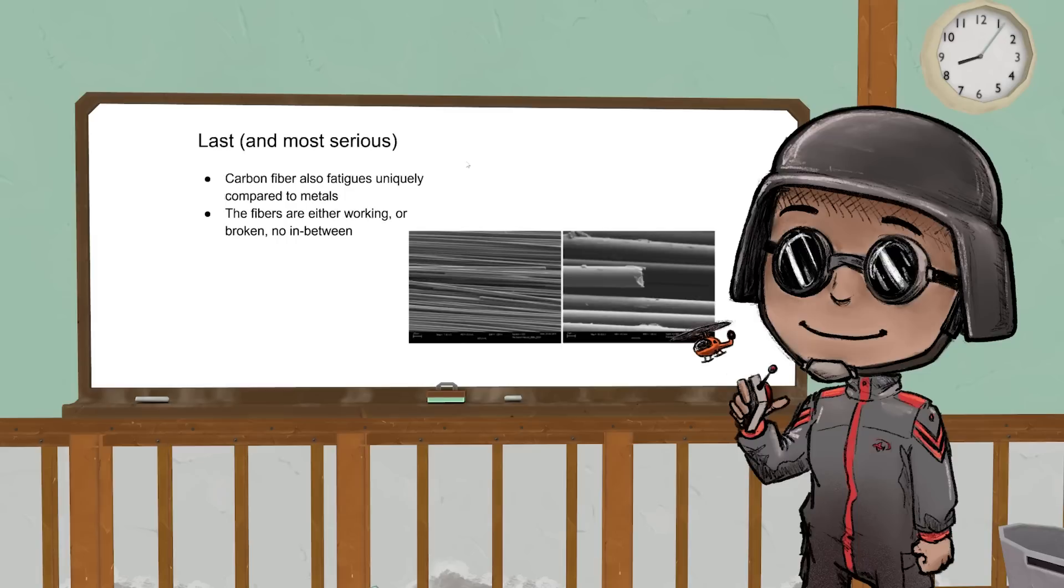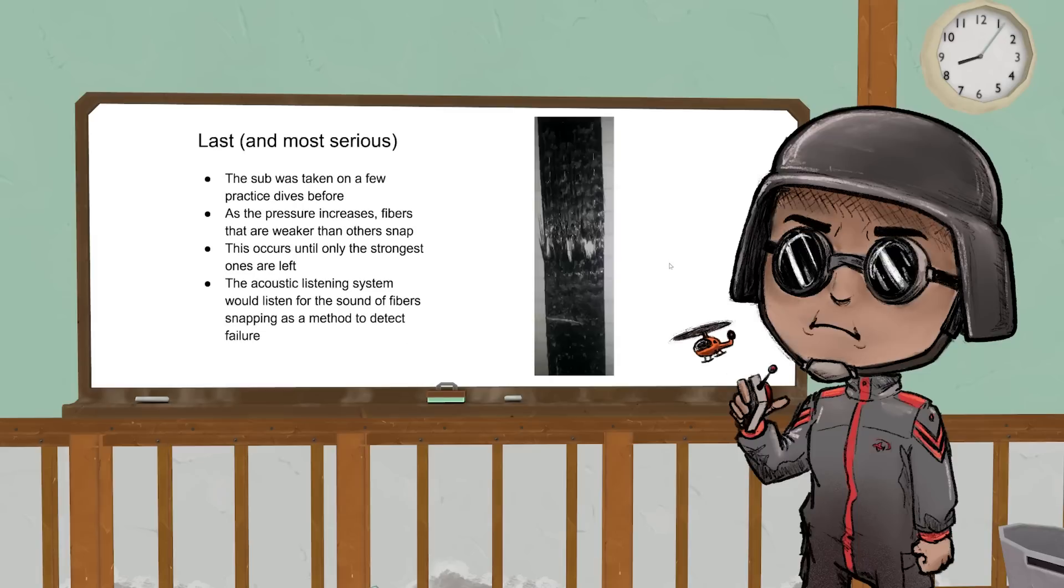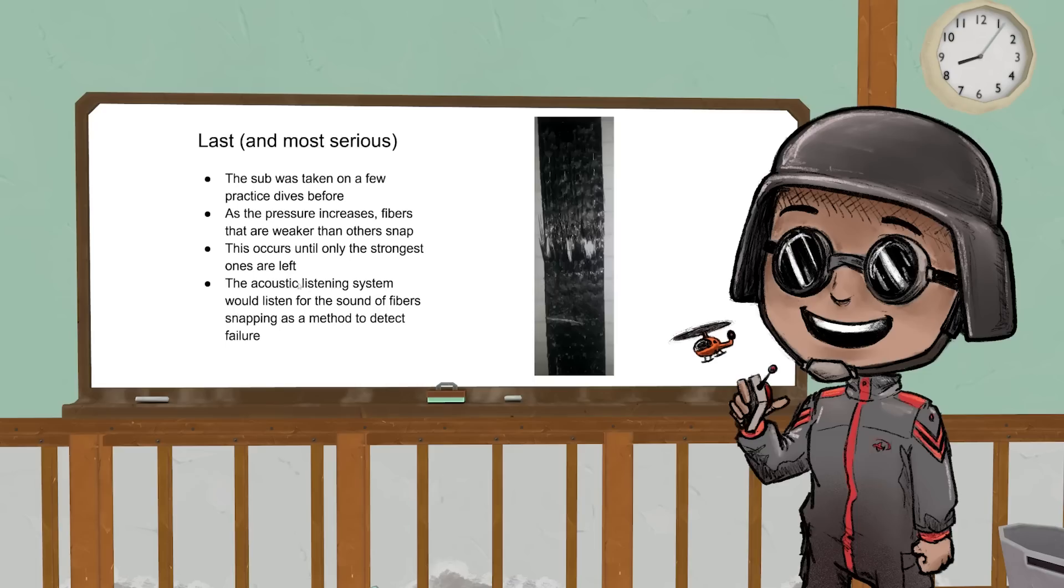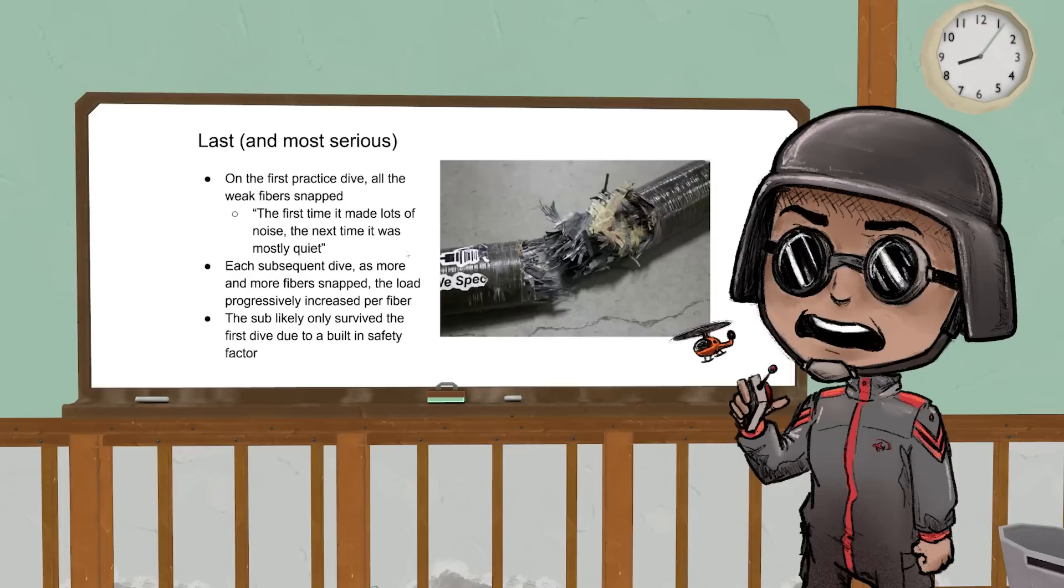The sub had been taken on a few practice dives, and what they decided to do was, because some carbon fibers aren't up to the task, they said, 'We'll take it down, we'll let the weak ones break on purpose so that the strong ones are left behind, and then on the real dive, this acoustic monitoring system will hear those strong ones breaking and say, okay, we should go back now.' Each time he went down, more fiber snapped. The load per fiber increased.